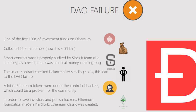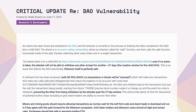To understand why the community was divided, we have to go back in time. It all started after the creation of the DAO, known as the Distributed Autonomous Organization, which was essentially a venture capital firm that would allow investors to make all decisions through smart contracts with no leaders and no authorities. There were several security flaws with the DAO code, which were repeatedly pointed out in May and June of 2016.